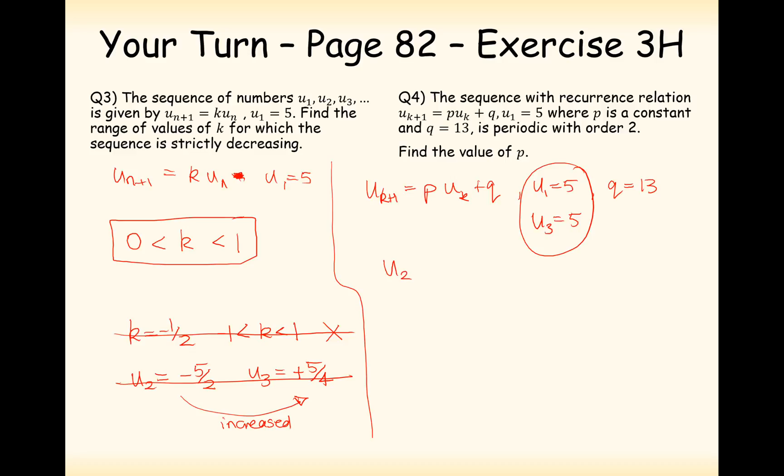Let's work out u_2 first. So we're going to get 5 times p plus 13 as our value for u_2. And then next, we'll have to set u_3 equal to p times u_2, which is 5p plus 13, so we're now substituting u_2 into this formula here to work out u_3, plus 13. And this has to equal 5. So let's expand the brackets. 5p squared plus 13p plus 8 equals 0.